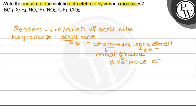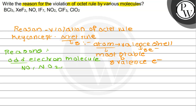The reasons behind the violation of octet rule: the first important reason is odd electron molecules. That means the odd number of electrons around the atoms. For example, odd electron molecules — NO, NO2, ClO2, etc. Odd means an odd number of electrons around the molecule.